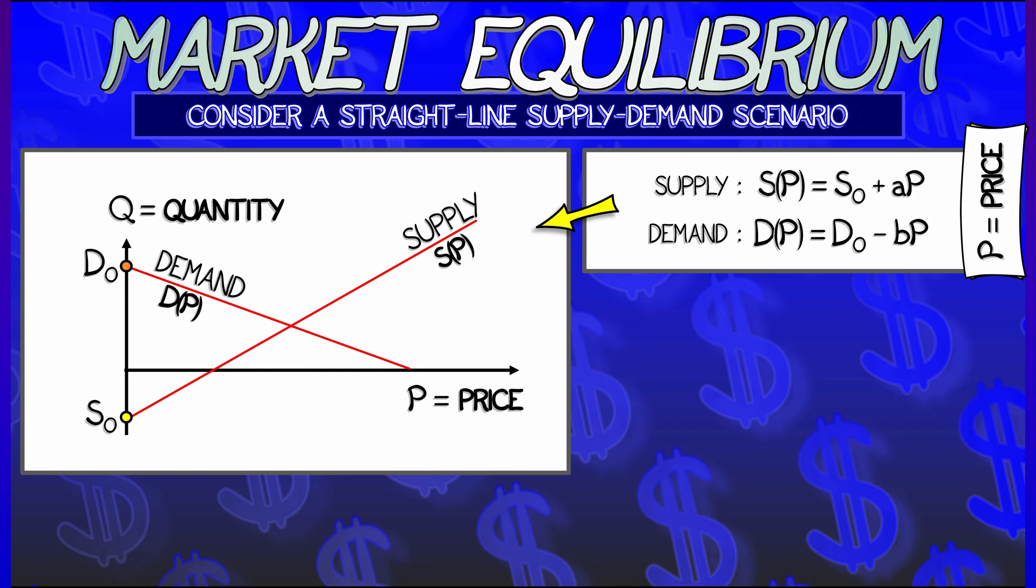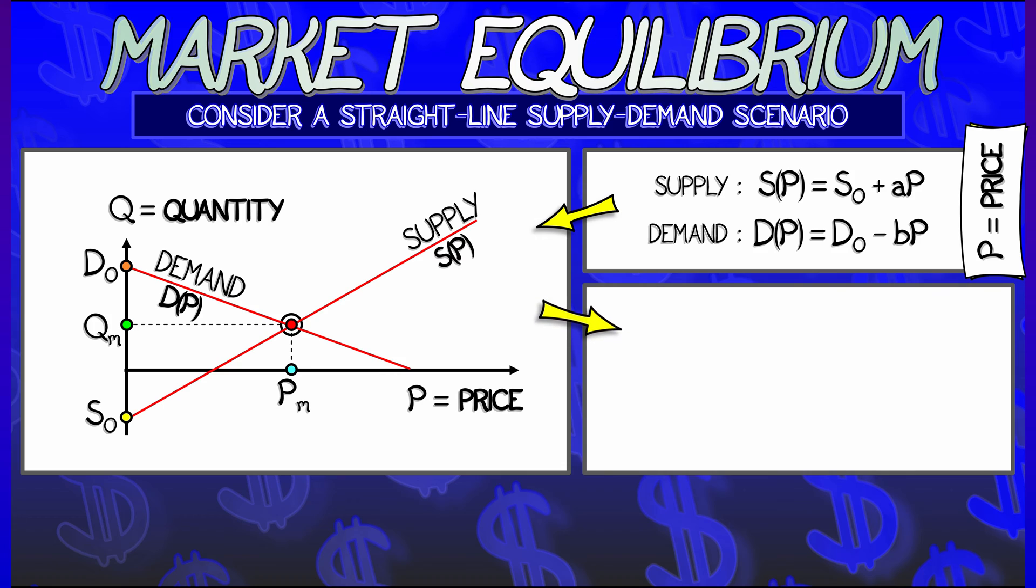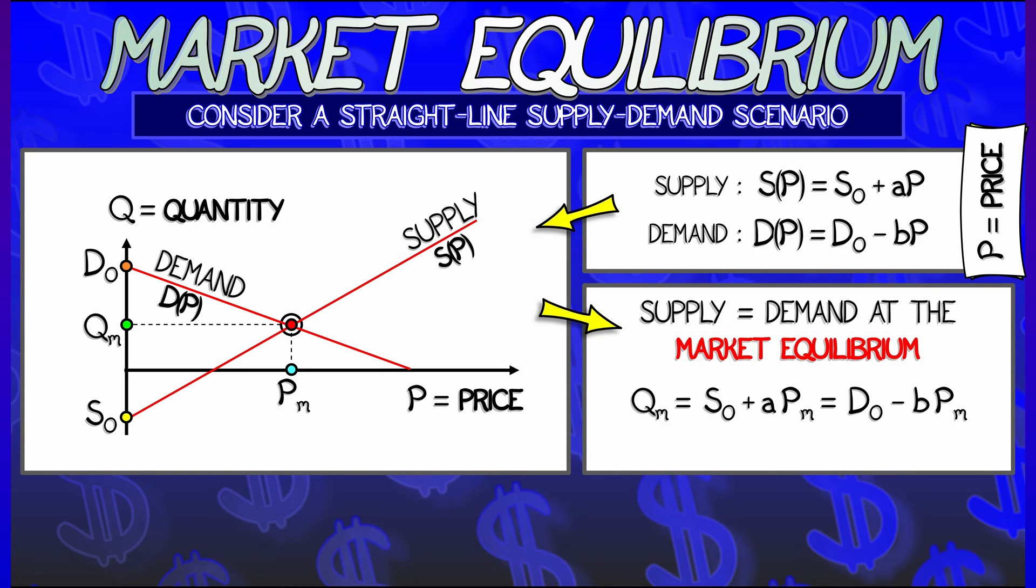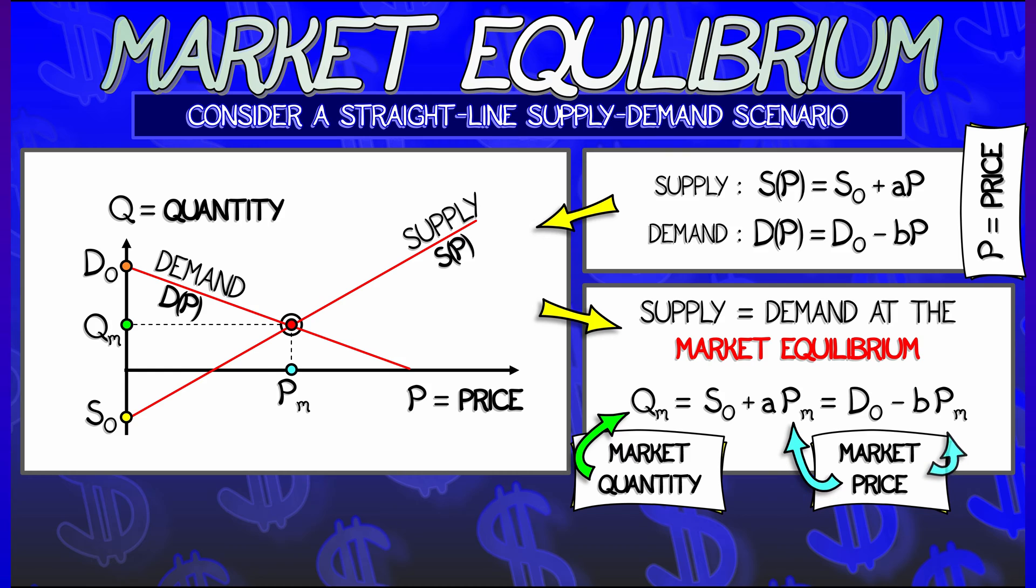These two lines are going to intersect somewhere. This is the market equilibrium, and it occurs at a certain price, p-sub-m, the market price, and at a certain quantity, q-sub-m, the market quantity.